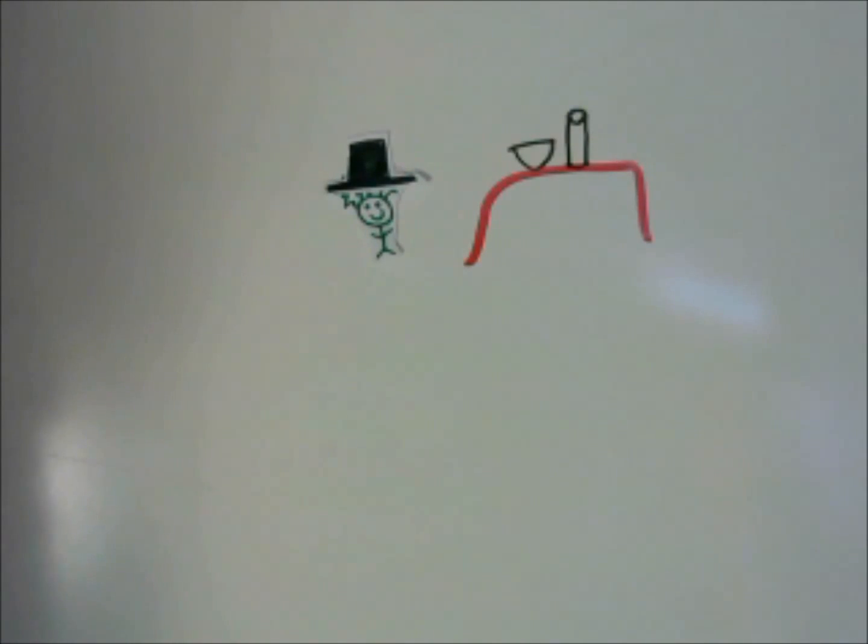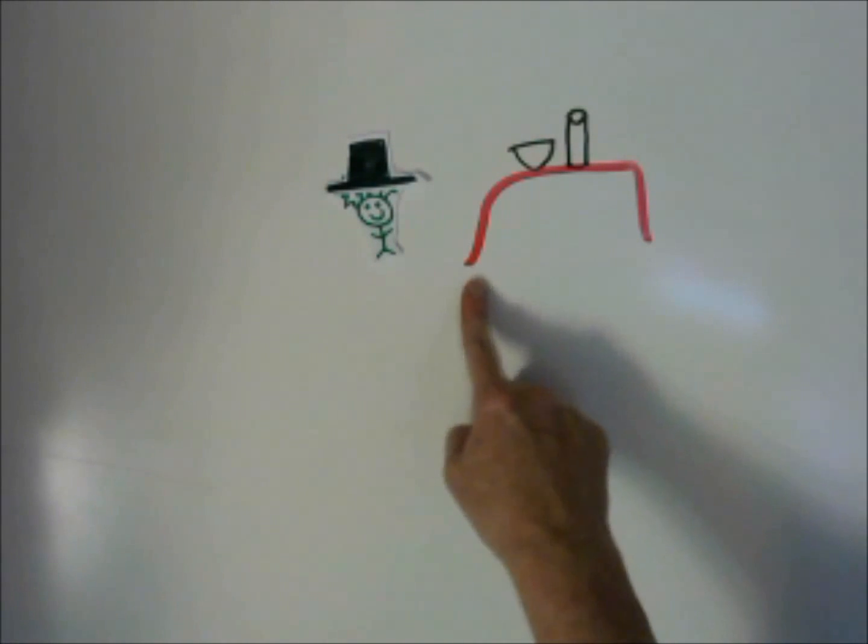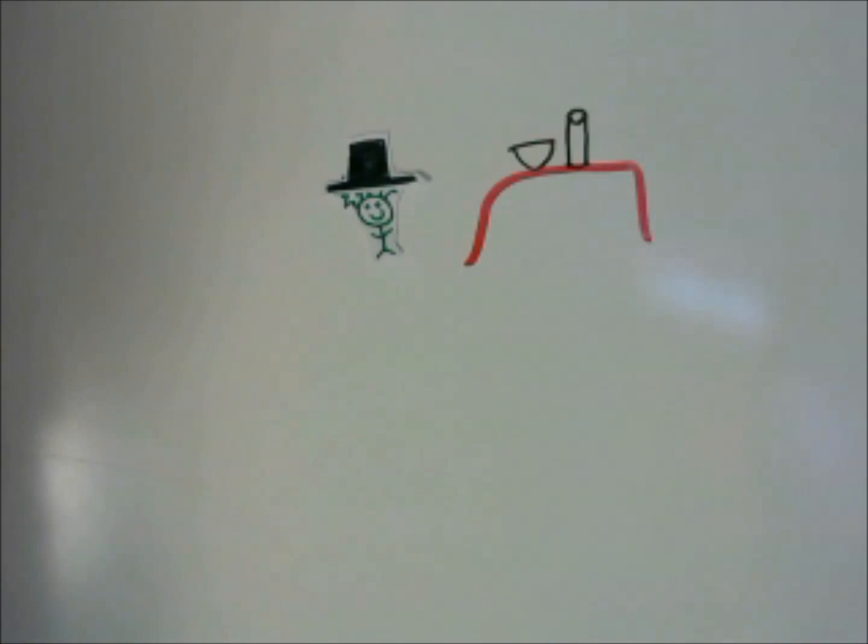Fred is trying out for the school talent show. He wants to do a magic trick. He's going to pull the tablecloth out from under the glass and bowl and hope that they stay in place. Wow, it worked! Why did his magic trick work?